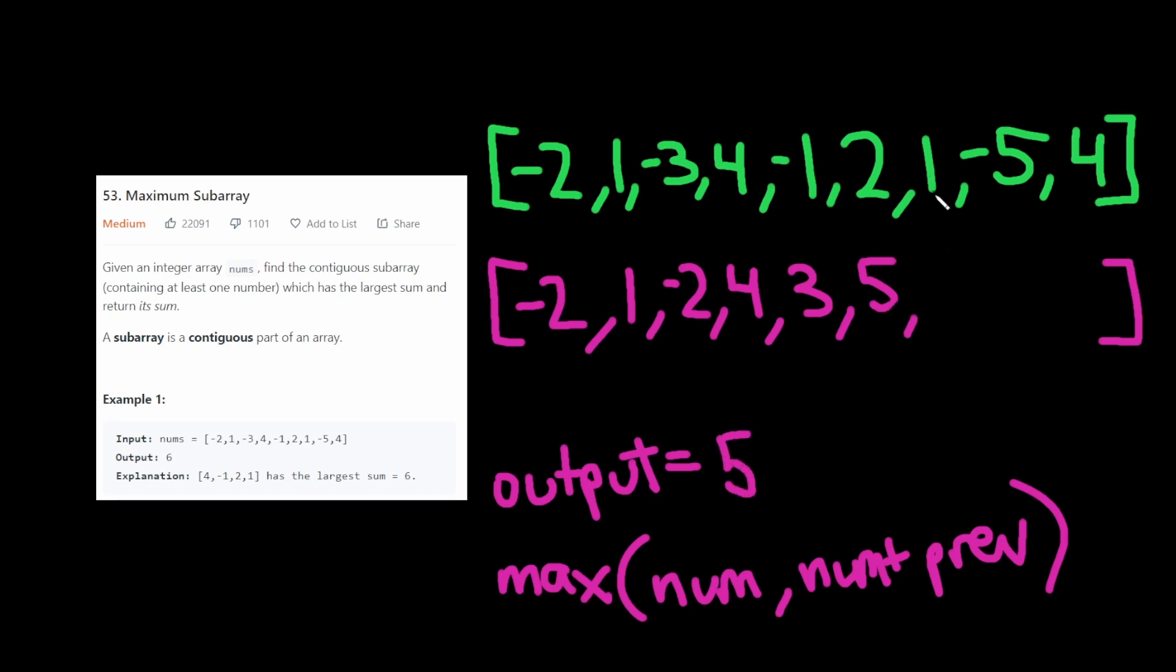Then we get to this 1. And now okay it's going to be 6 here. So now we replace the output with 6. Then we get to this negative 5 here and we run the algorithm. It's going to be 1. Then we get to this 4 and we run the algorithm. It's going to be 5.